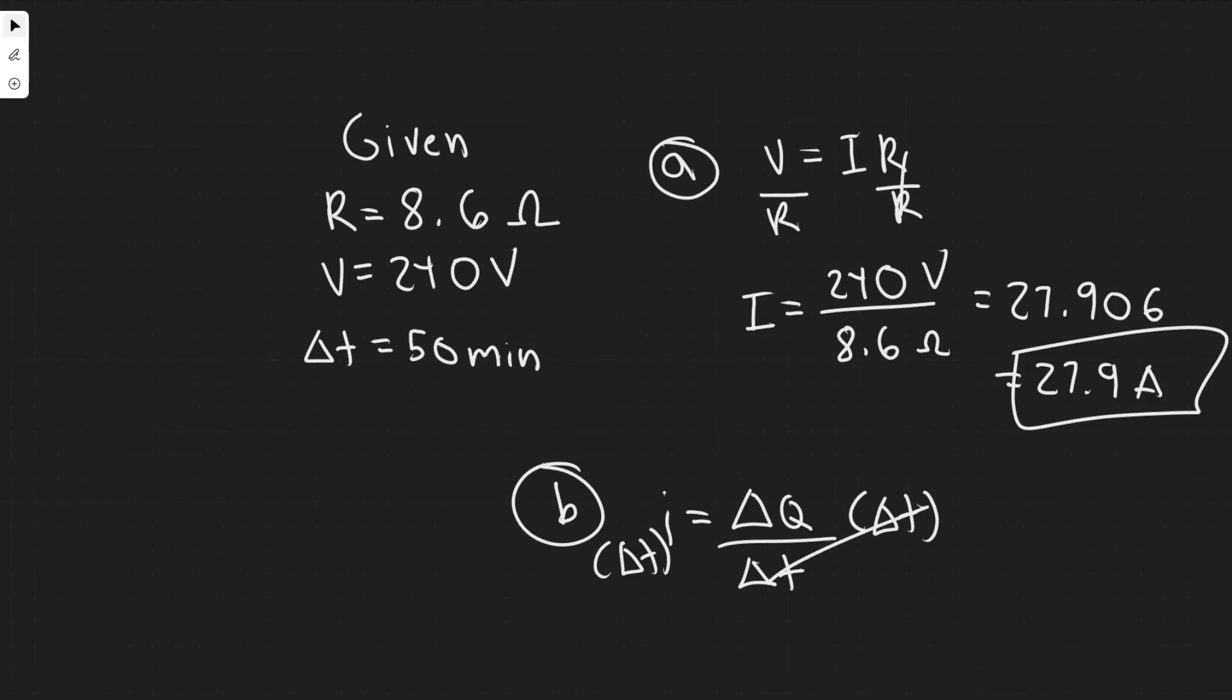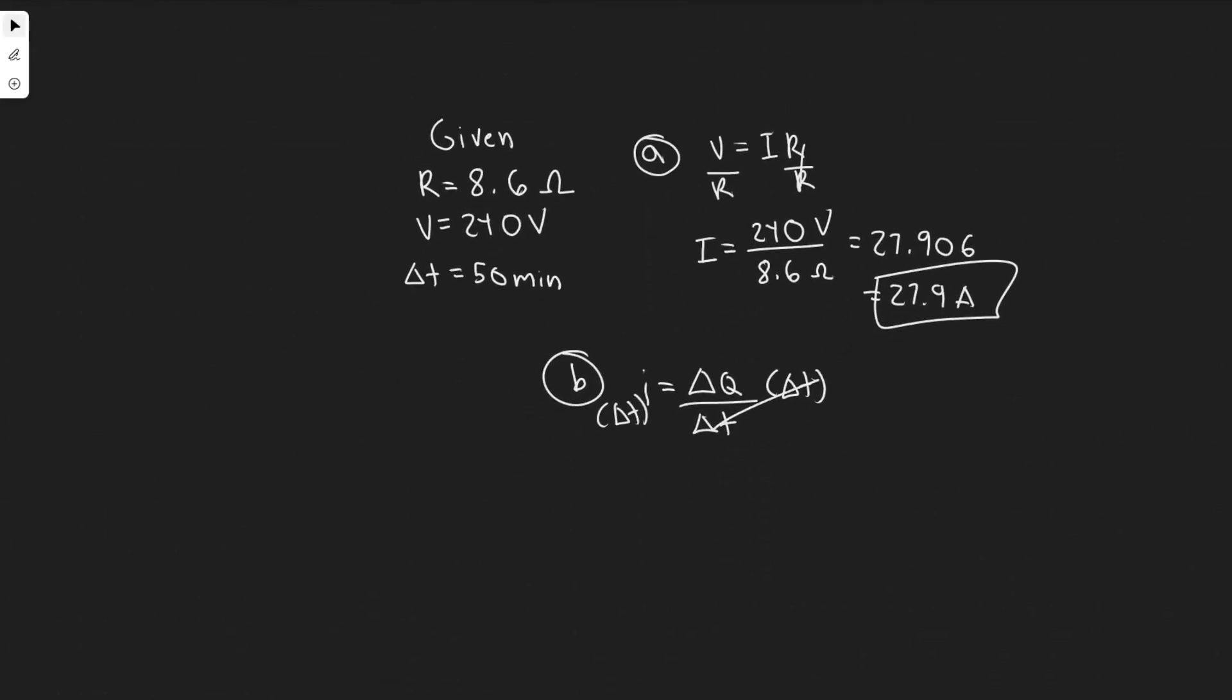That'll cancel, and so you're going to have Delta Q equals I times Delta T. What is our current? We found in the last problem 27.906—I'm going to use the more exact value and then multiply by Delta T. Keep in mind, we're in amps here. What are amps? Amps are coulombs per second, so this needs to be in seconds, it can't be in minutes.